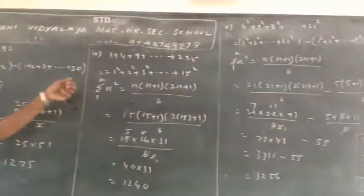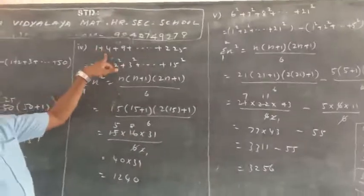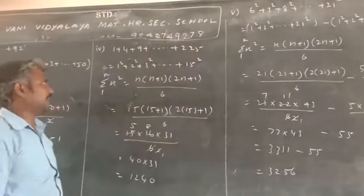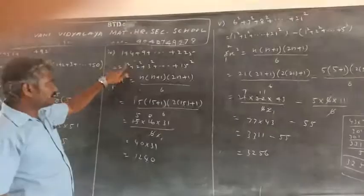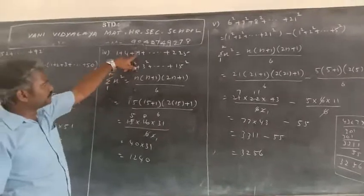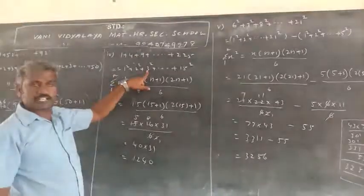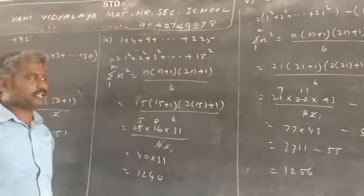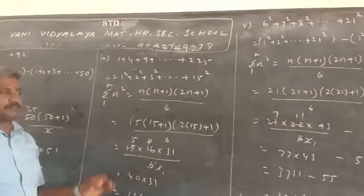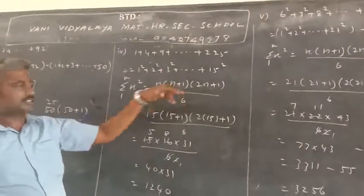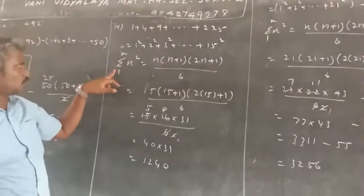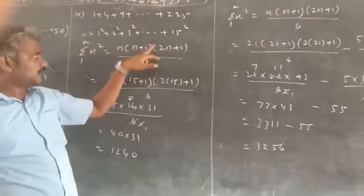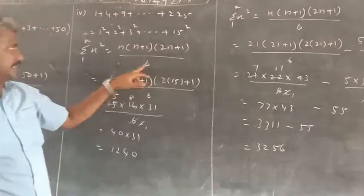Next, fourth one: 1 plus 4 plus 9 plus etc. plus 225. Convert: 1 is 1 square, 4 is 2 square, 9 is 3 square, and so on. 225 converts to 15 square. So this is the formula for sum of squares: summation 1 to n of n square is equal to n into n plus 1 into 2n plus 1 by 6.